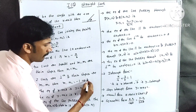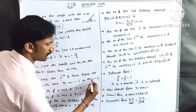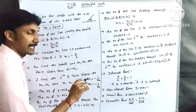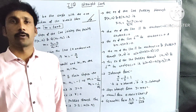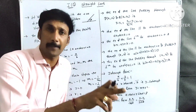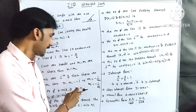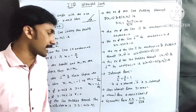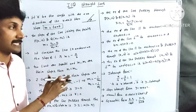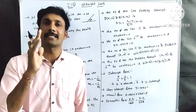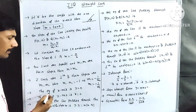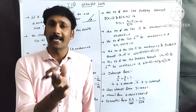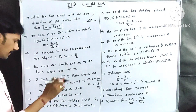For perpendicular lines: m1 equal to minus 1 by m2, and m2 equal to minus 1 by m1. So the perpendicular slope is the negative reciprocal of the other slope. The formula for perpendicular slope is negative reciprocal.